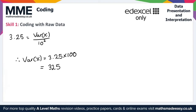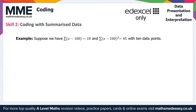Moving on to Skill 2, which is coding with summarized data. We can also apply coding to simplify summarized data to calculate mean and variance. Suppose we have Σ(x − 100) = 18, Σ(x − 100)² = 45, and 10 data points. The obvious coding to try here is y equals x minus 100.